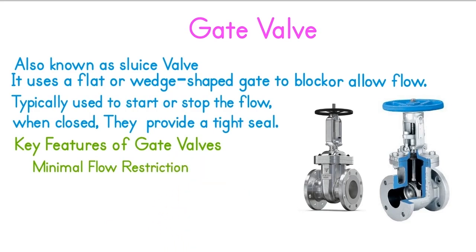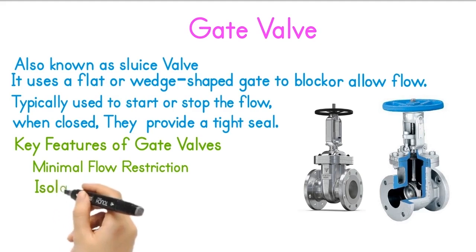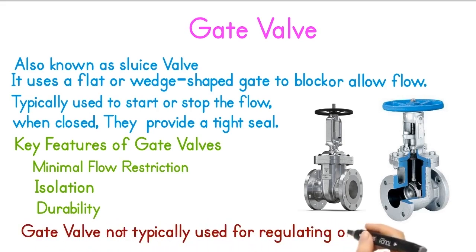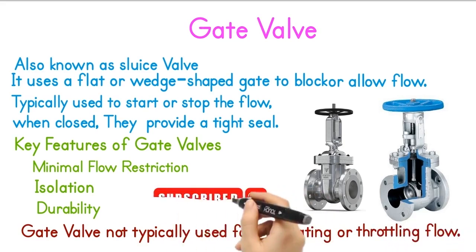When fully open, gate valves provide minimal resistance to flow, making them ideal for applications where free flow is needed. They are commonly used for isolating portions of a pipeline, preventing or permitting flow to specific areas. They are designed for high-pressure and high-temperature environments, found in industries like oil and gas, water treatment, and power plants. Gate valves are not typically used for regulating or throttling flow, as they can cause turbulence and damage when partially open.